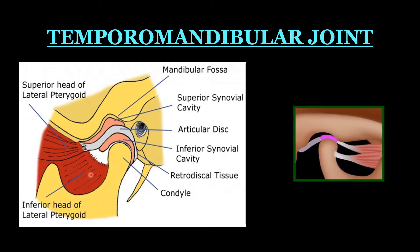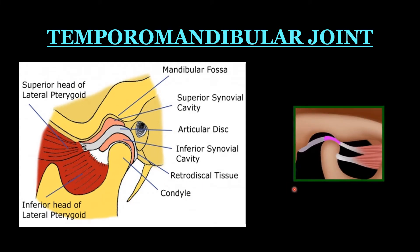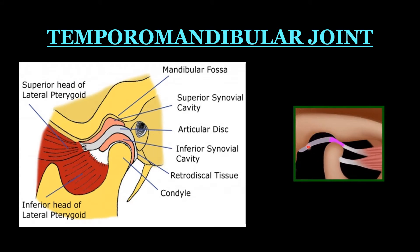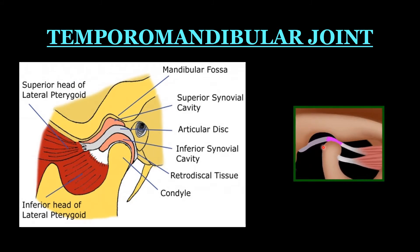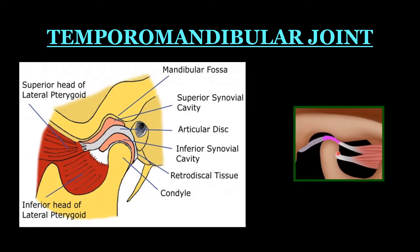In this picture, you can see the function of the temporomandibular joint — how the condyle process rotates and then translates along the mandibular fossa.